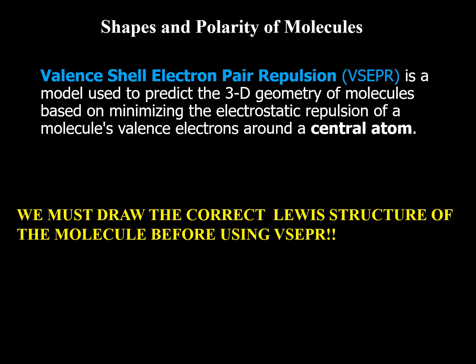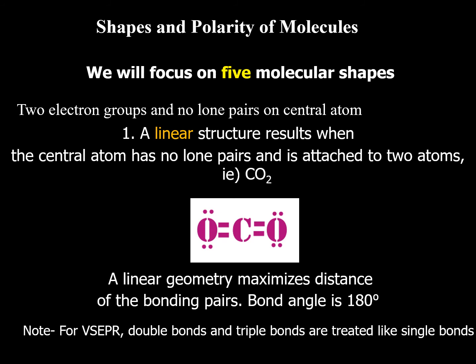Once we have the correct Lewis structure, the next topic is VSEPR — valence shell electron pair repulsion — to determine molecular shape. There are five shapes to know. The first is linear. We always focus on the central atom: for CO2, the carbon has two groups attached and zero lone pairs on the central atom, giving a linear shape.